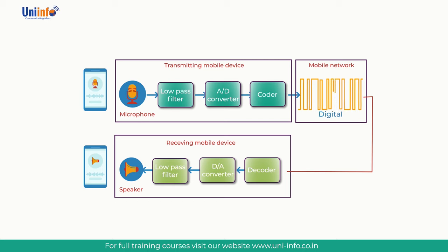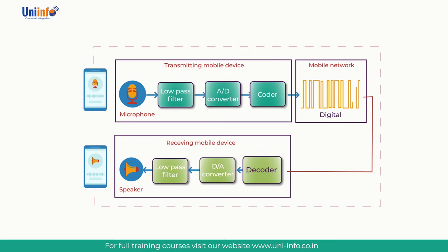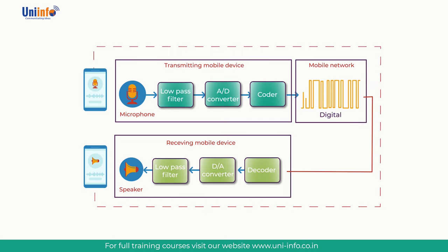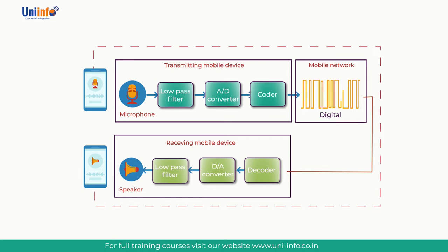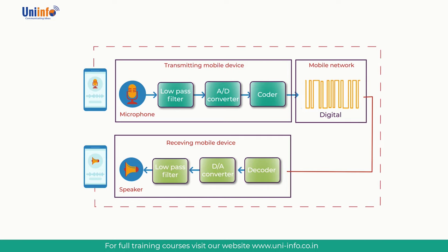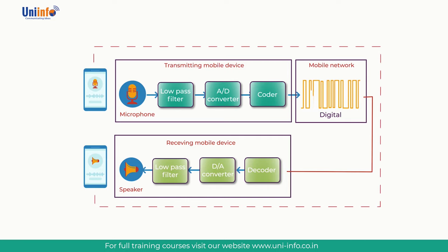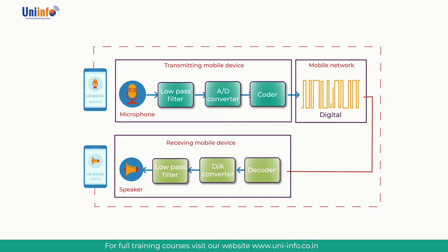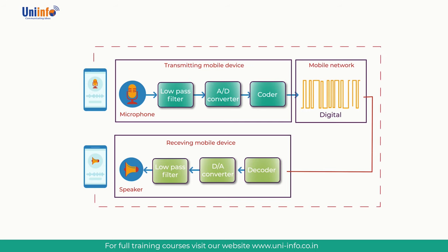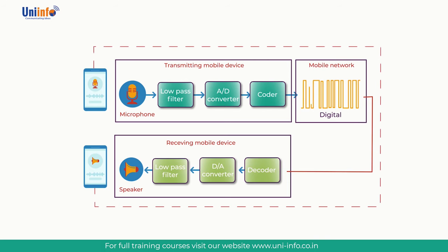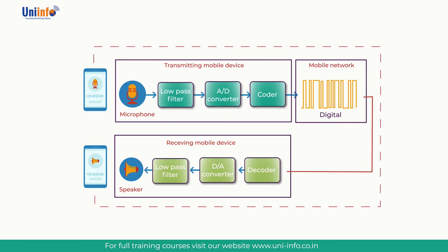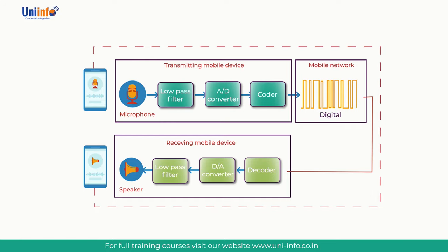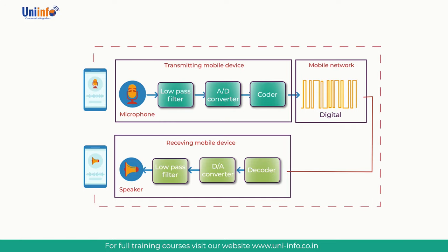The voice signal will travel across the mobile network in digital form until it reaches the destination mobile device, which will convert it from digital back to analog for output to the device's loudspeakers. Converting the analog signal to digital and then back to analog does introduce a certain amount of noise, but this is minimal compared to leaving the signal in its original analog state.